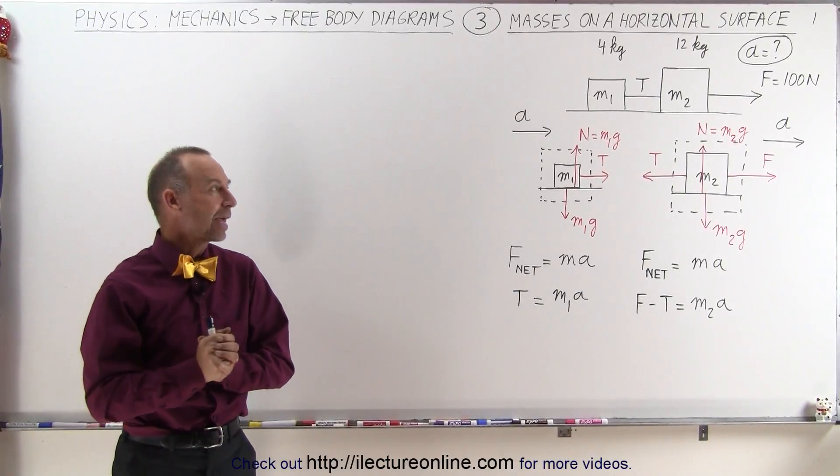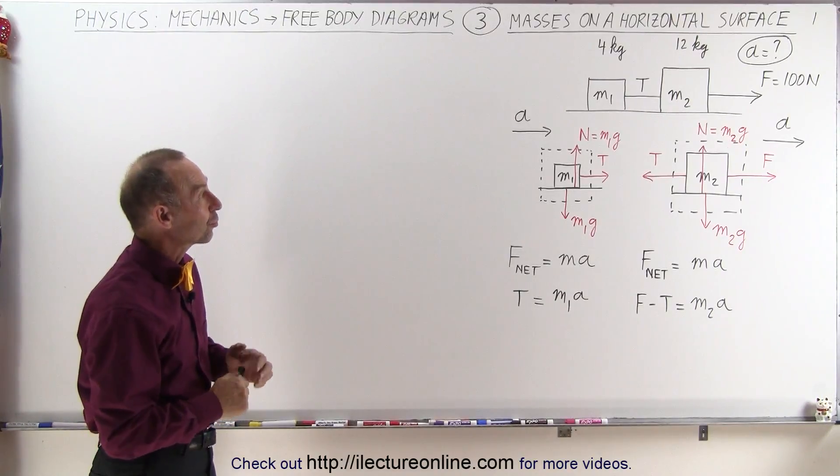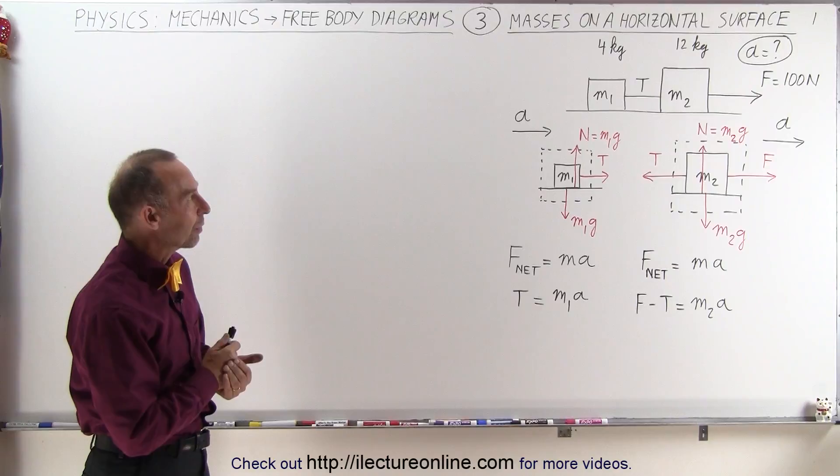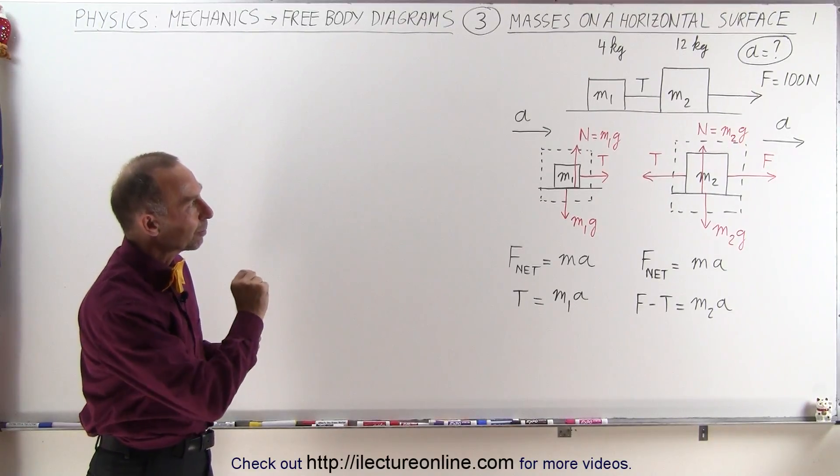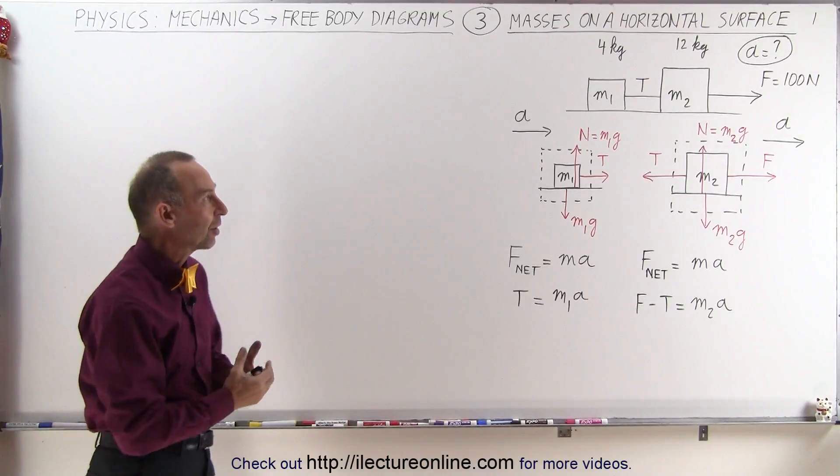Welcome to ElectronLine. Here we have a simple example where we have two masses connected together with a string and they're of different mass. The first one is four kilograms, the second one is 12 kilograms, and together they're being pulled by a hundred Newton force and we're supposed to find the acceleration.